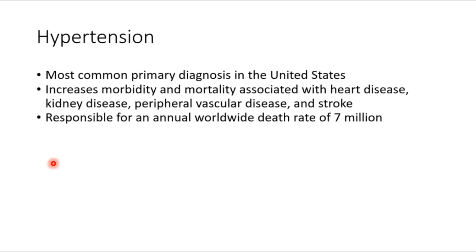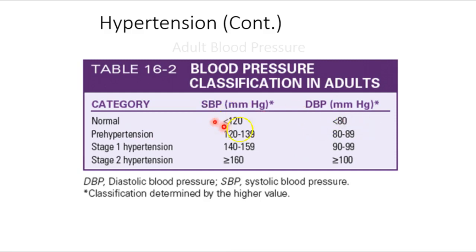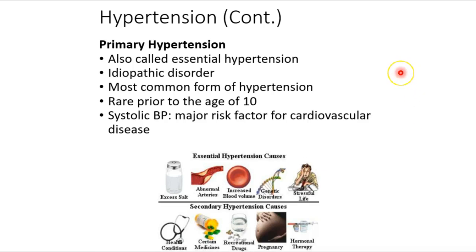Let's talk about hypertension. There's primary hypertension — something to do with the blood vessels themselves — and secondary hypertension, where an organ involved in blood pressure regulation is dysfunctional. Hypertension is responsible for approximately 7 million deaths annually worldwide. The current standard: 120 over 80 is now considered the high end of normal.